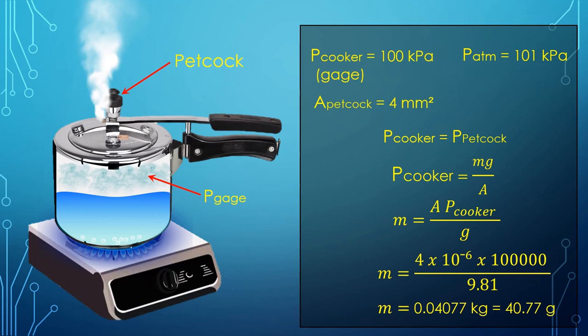So if we take a petcock whose weight is less than this, the pressure will be released early. And if we take a petcock whose weight is higher, then the pressure cooker will not release the pressure and may blast off.